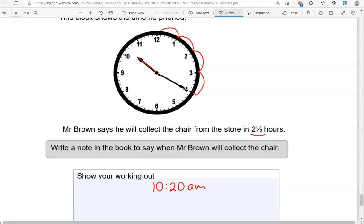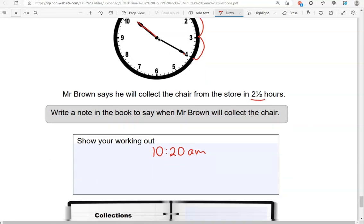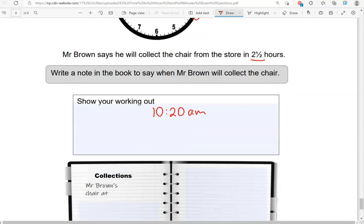So 2 and a half hours added to 10:20 AM. So 10:20, if we add one hour, that will be 11:20. If we add another hour, that will be 12:20.